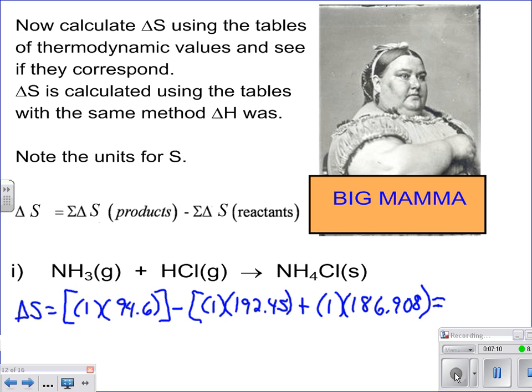Okay, and this equals, when we do our math, we end up getting negative 284.758. And that is, sorry, that's in joules per Kelvin.